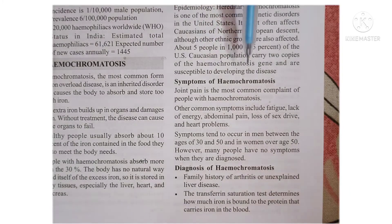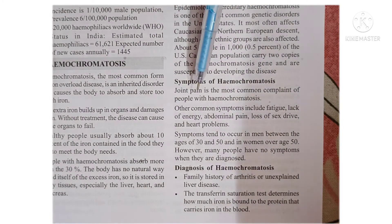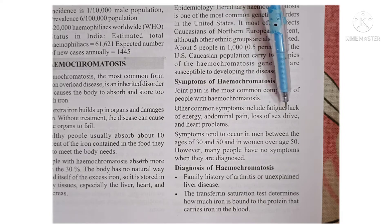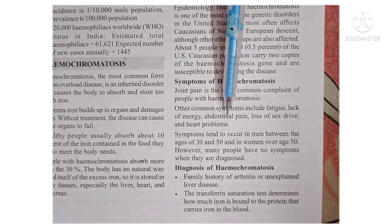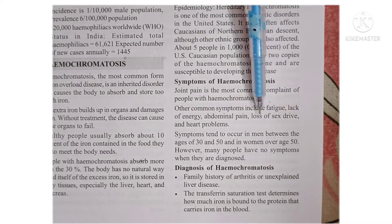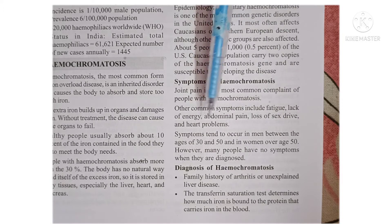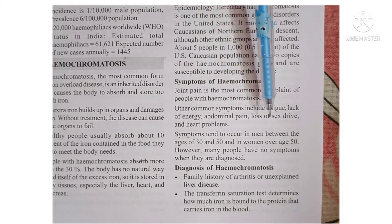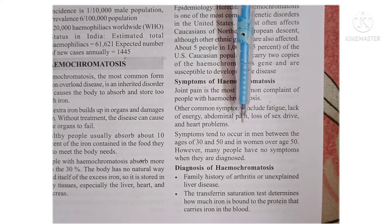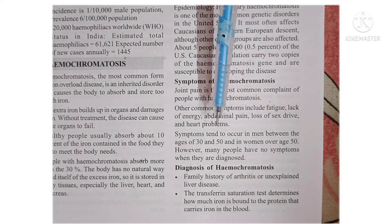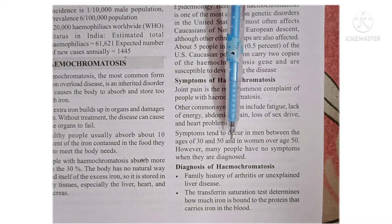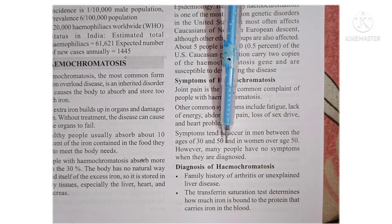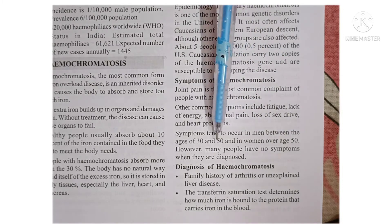The symptoms of hemochromatosis include joint pain, because iron is deposited in the joints. Other symptoms include fatigue, lack of energy, abdominal pain, loss of libido or sexual drive, and heart problems. The symptoms tend to occur in men between the ages of 30 and 50 years, and in women over the age of 50 years.